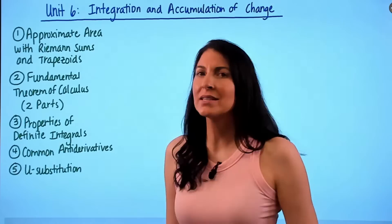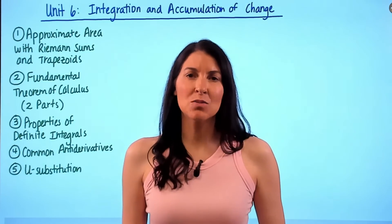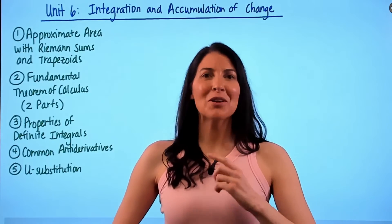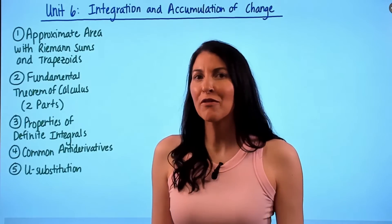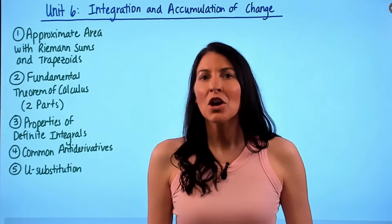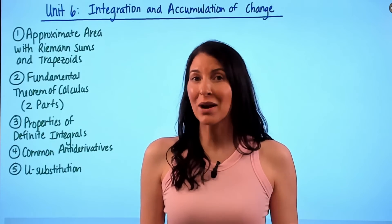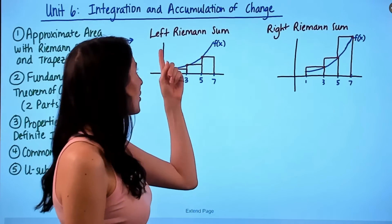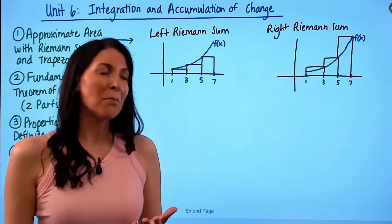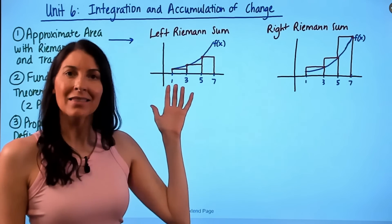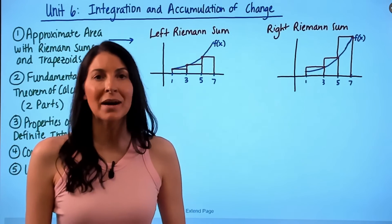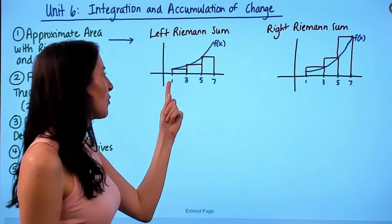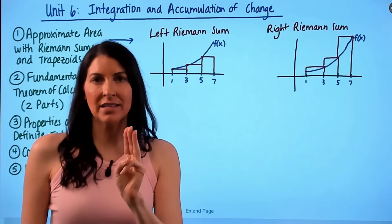The first topic is knowing how to approximate area with Riemann sums and trapezoids. Unit 6 is where we first see the concept of determining the area under a curve. Instead of jumping right into finding the exact area, we first talk about how we can approximate it using common geometric shapes such as rectangles — also known as Riemann sums — and trapezoids. The most common Riemann sums are left and right Riemann sums. In this example I've shown how to draw a left Riemann sum and a right Riemann sum over some function f(x) on the interval from one to seven using three rectangles.